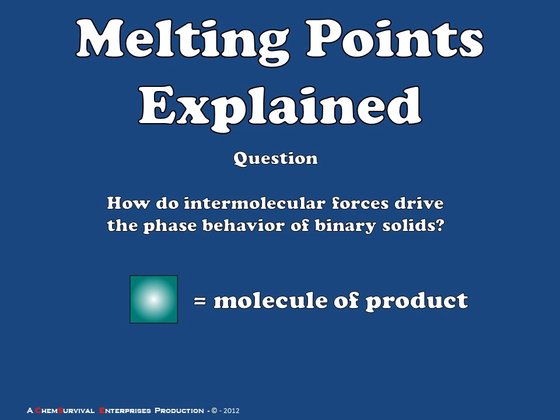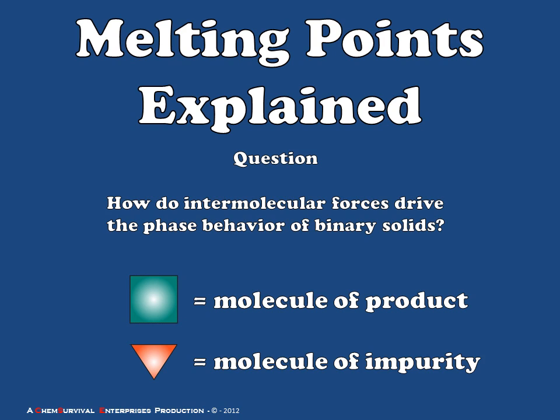First, a molecule of our product of interest, which we're going to represent as green squares again, and a molecule of impurity, which we're going to depict as red triangles. Let's take a look at how a pure sample would melt and how an impure sample would melt.